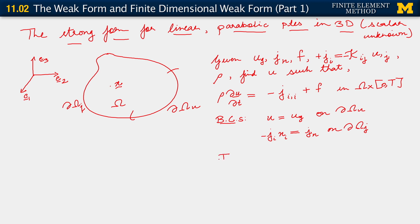Additionally, we need an initial condition. We have only one initial condition because our problem has a single derivative in time — it's first order in time. So we need a single initial condition, and that is specified as U at time equal to 0 equals some given function U_0, suggesting the initial value of U over the domain.